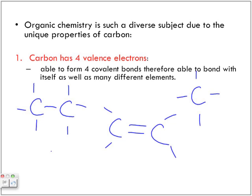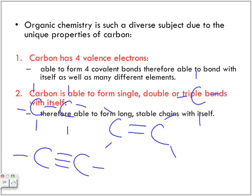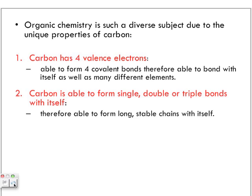And if we have carbon triple bonded to another carbon, we've used up three of each of these carbon bonds, which allows it only to bond one more time with either another carbon or with hydrogens. Carbon is able to form single, double, or triple bonds with itself, therefore able to form long, stable chains with itself.